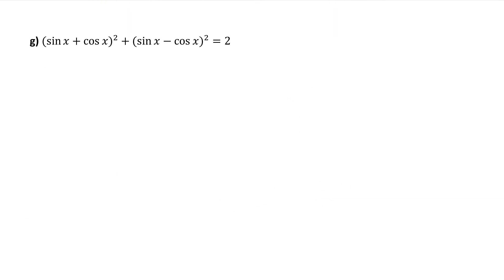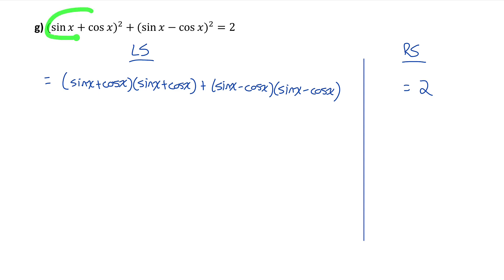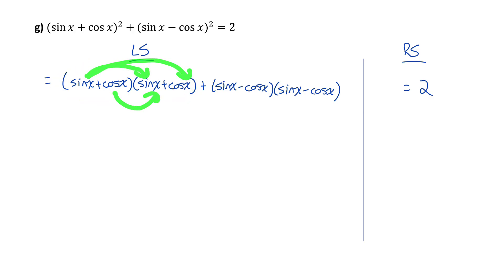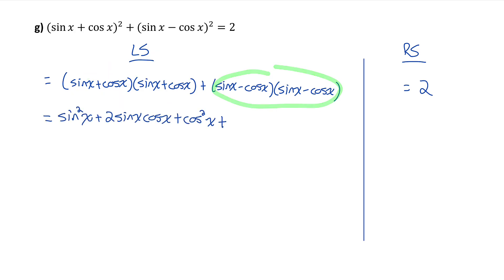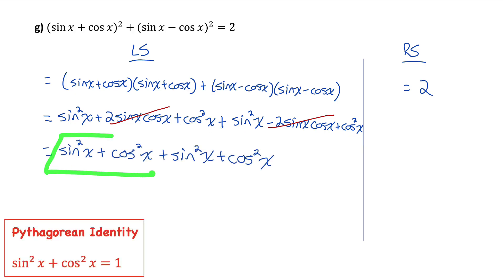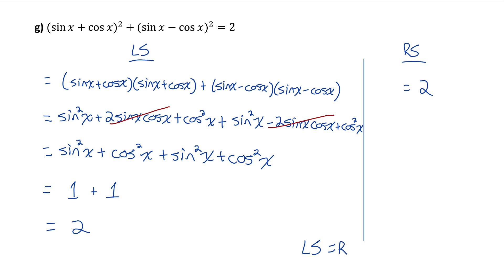There are two more identities. I'll separate into left and right side. I rewrote sine x plus cos x squared as two factors of that binomial, and same for the other squared binomial. Expanding each pair: the first gives sine squared plus 2 sine cos plus cos squared, the second gives sine squared minus 2 sine cos plus cos squared. The 2 sine cos terms cancel. What remains is sine squared plus cos squared plus sine squared plus cos squared — two Pythagorean identities, each equal to 1. So we have 1 plus 1, which equals 2. Left side equals right side.